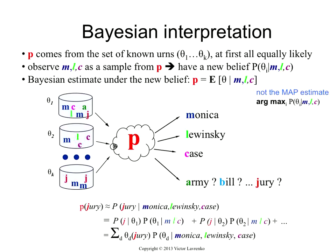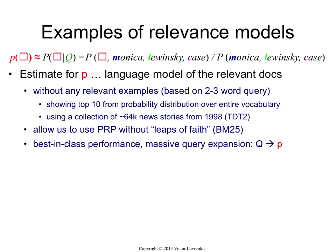And of course, this urn would have a small weight for the posterior part because it doesn't have 'Lewinsky' and 'Case,' and it would have a high probability for the word 'jury' because it occurs twice in that document. So that's a way that you can estimate — this is a method to estimate a probability distribution over words based on a small sample of terms.